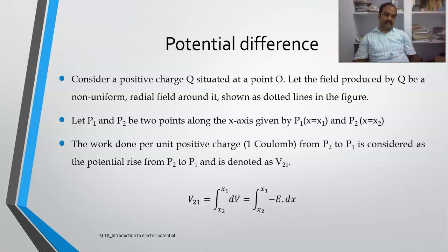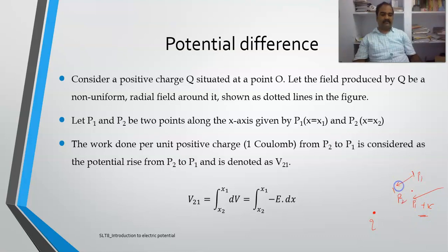What is the concept of potential difference? If you are moving a unit charge from infinity to a point, it is called potential. If you are moving between two finite points P1 and P2, it is called the potential difference between the two points. So if one point is at infinity, it is called potential; if both points are finite, it is called potential difference between the two points.